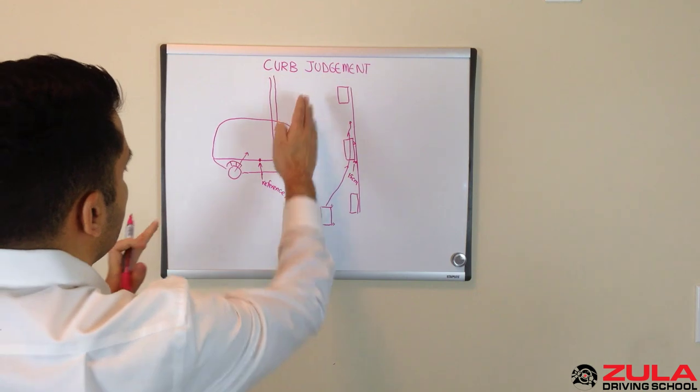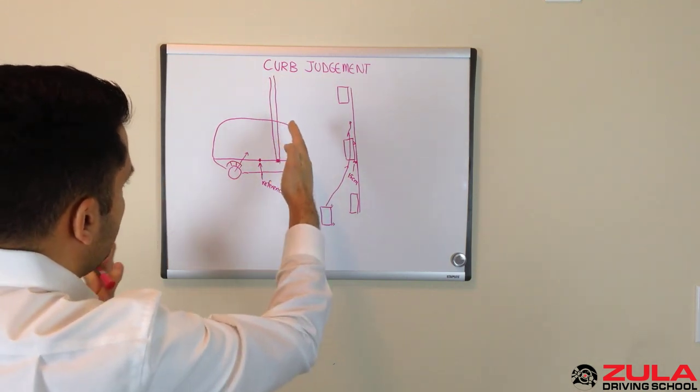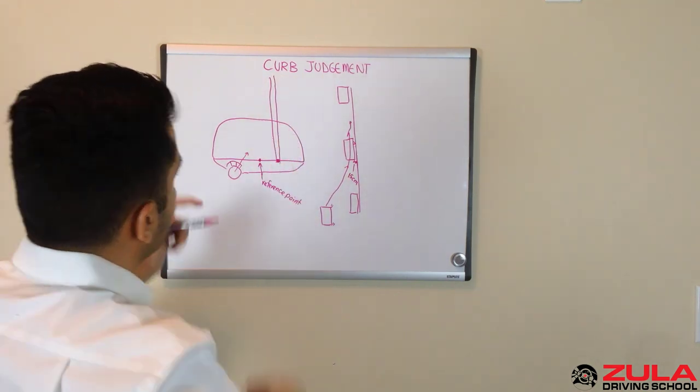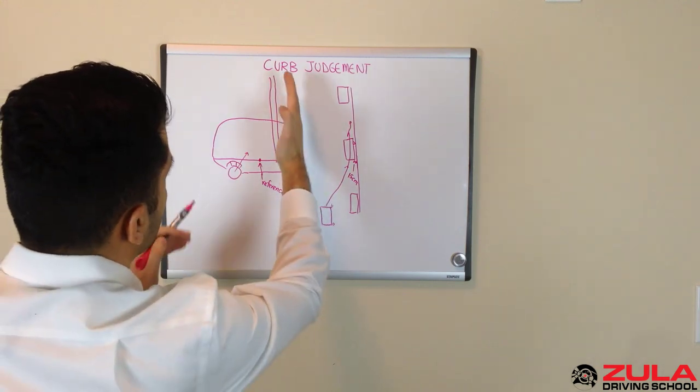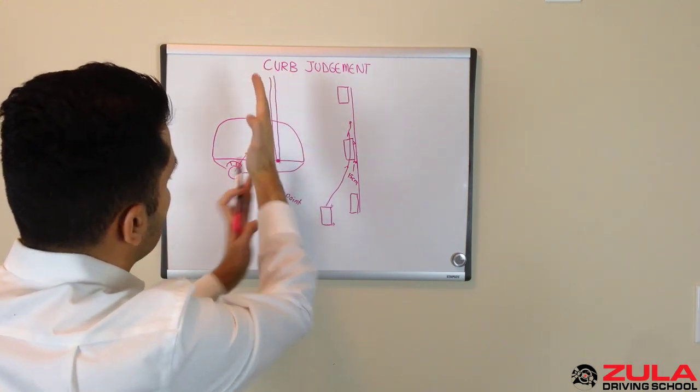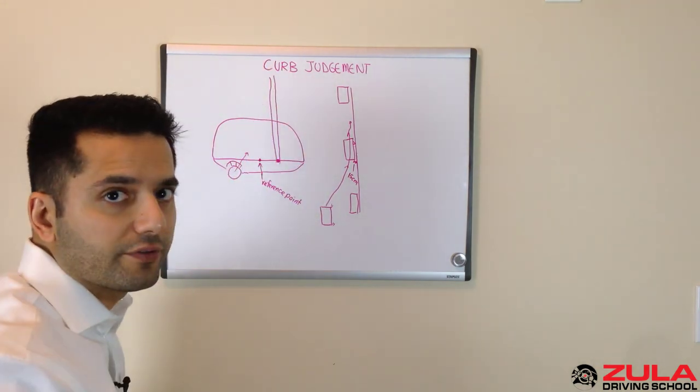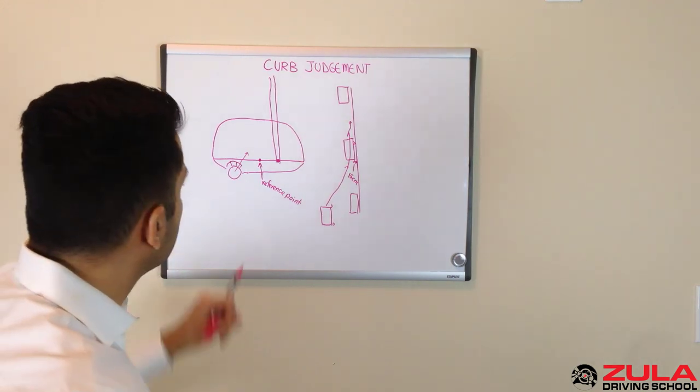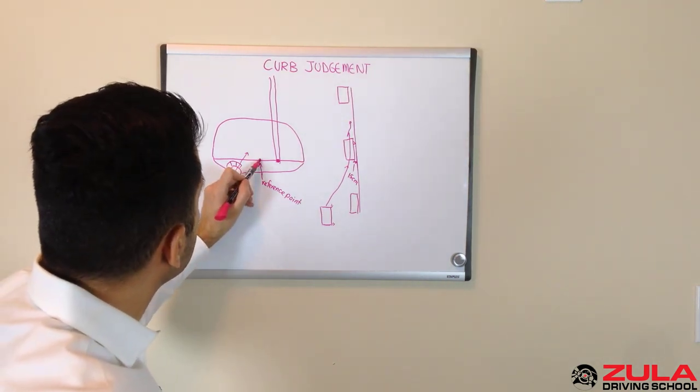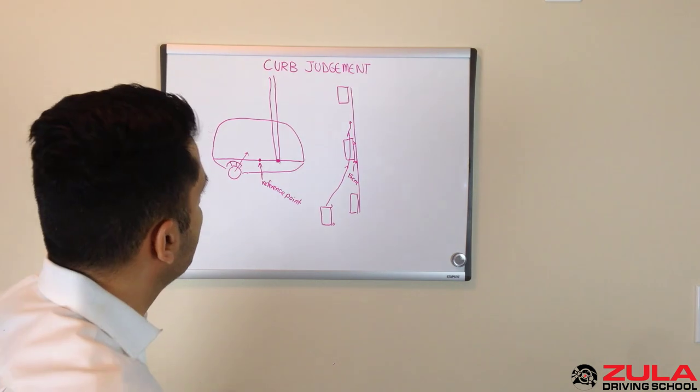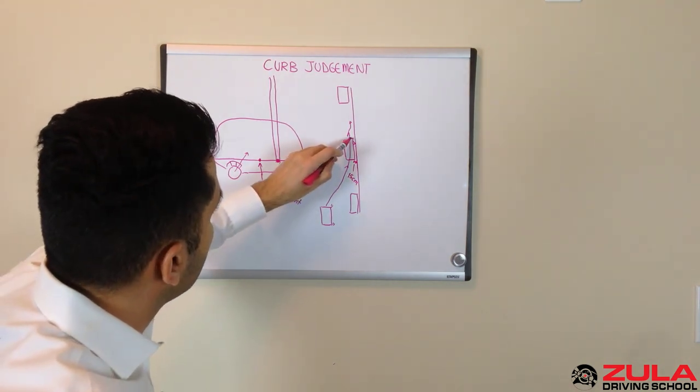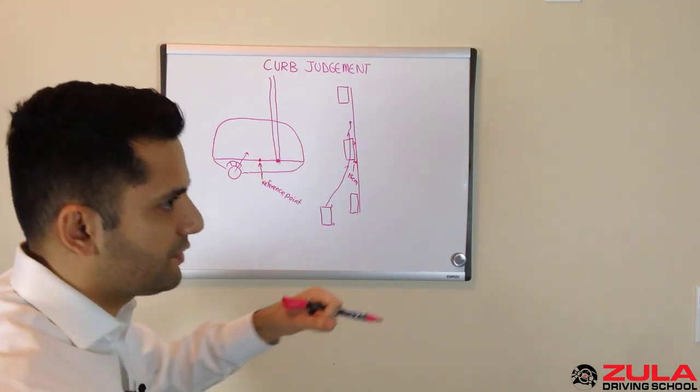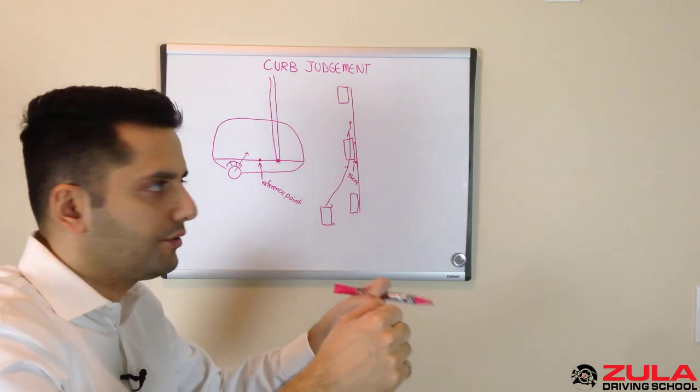Now next time you're driving down the road and you come towards that curb, you're going to see that curb get closer and closer to that reference point that you set for yourself. When that reference point lines up with the curb, then you know that you've gotten close enough. Now it's just a matter of straightening out your car.